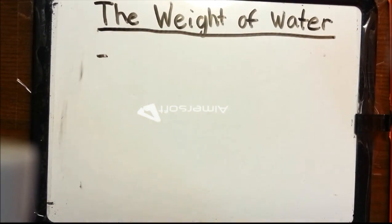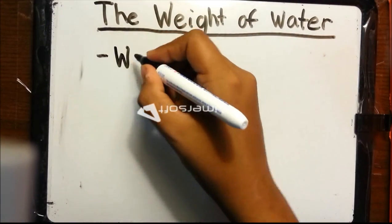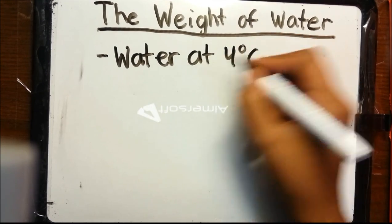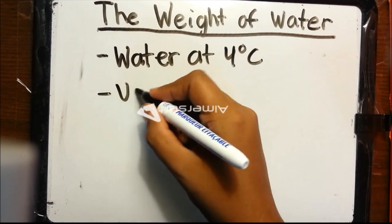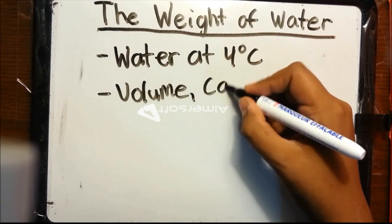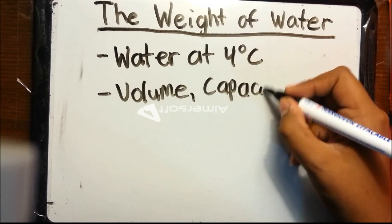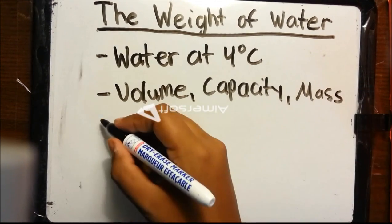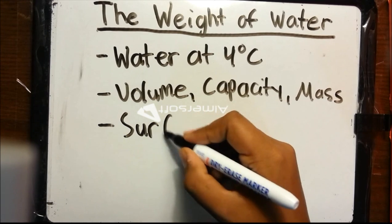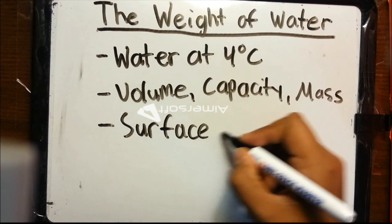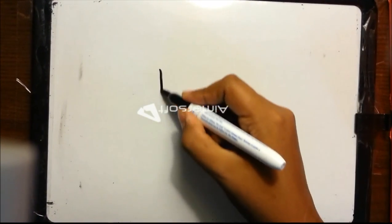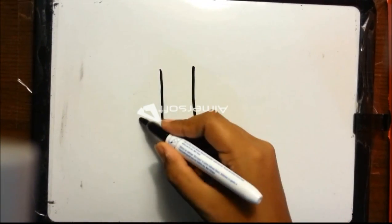In this tutorial, you have now learned what it means when water is at 4 degrees Celsius, how it's related to volume, capacity, and mass, and how to calculate the surface area of any prism. Thank you for watching, and I hope you enjoyed it.